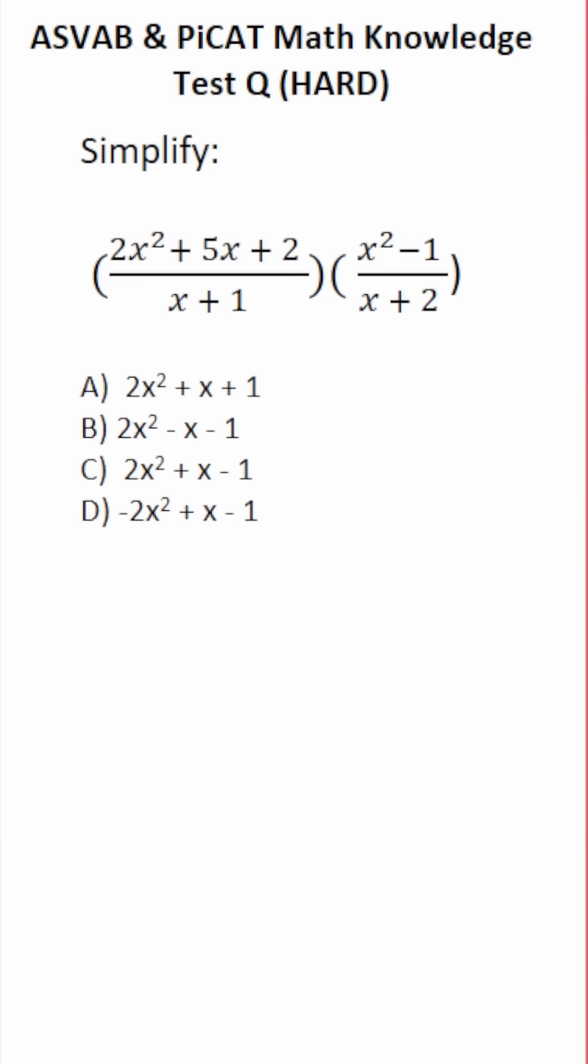This math knowledge practice test question for the ASVAB and PICAT says simplify 2x squared plus 5x plus 2 over x plus 1 times x squared minus 1 over x plus 2. So these are called rational expressions. We're multiplying them together.